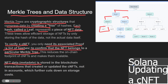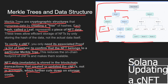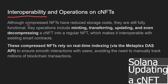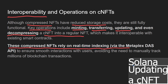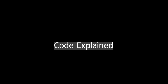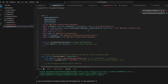To verify a cNFT, you need its associated proof — a list of hashes confirming the NFT belongs to a particular Merkle tree. NFT metadata is stored in the blockchain transactions that created or updated the cNFTs, not in accounts, which further cuts storage costs. Key operations for cNFTs include minting, transferring, updating, and even decompressing a cNFT into a regular NFT. These rely on real-time indexing via the Metaplex DAS API for smooth user interactions.